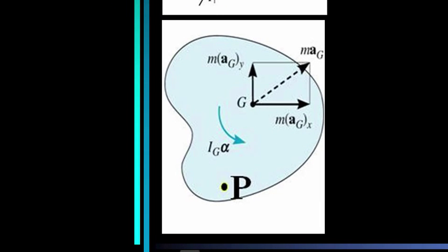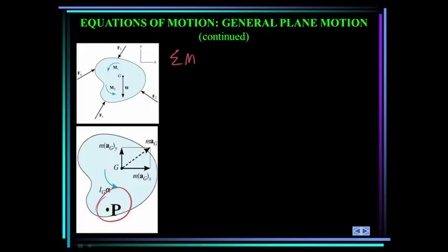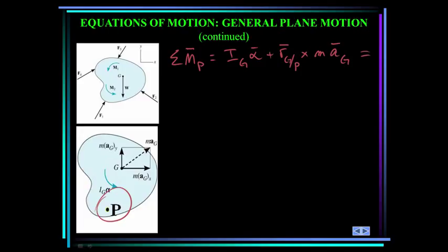Sometimes it may be convenient to sum moments about a point P rather than the mass center. The moment equation as a vector equation becomes: summation of moments about P equals the mass moment of inertia about G times angular acceleration, plus r of the mass center with respect to P crossed with mass times acceleration of the mass center. I highly recommend using this vector form of the equation so you won't have to worry about the signs. Always assume alpha is positive counterclockwise and omega is positive counterclockwise — if they come out negative, they're in the clockwise direction.